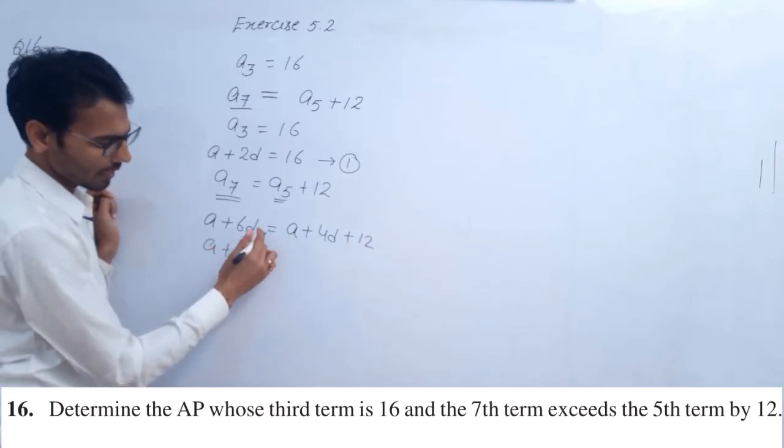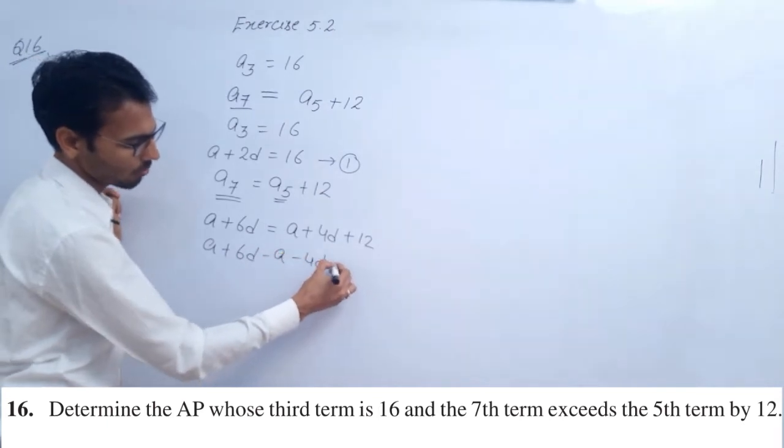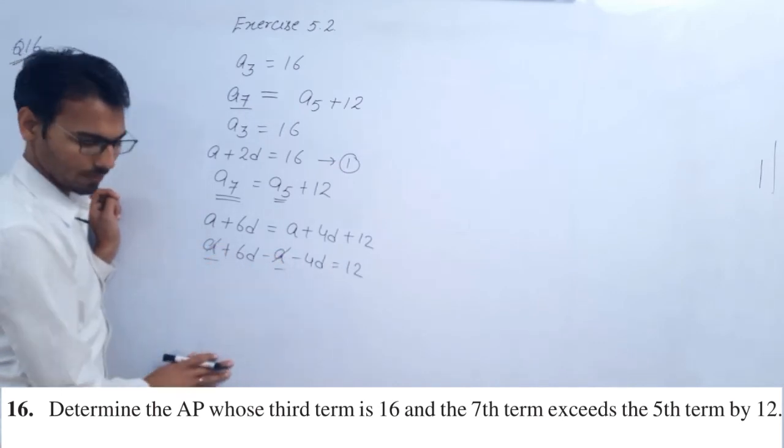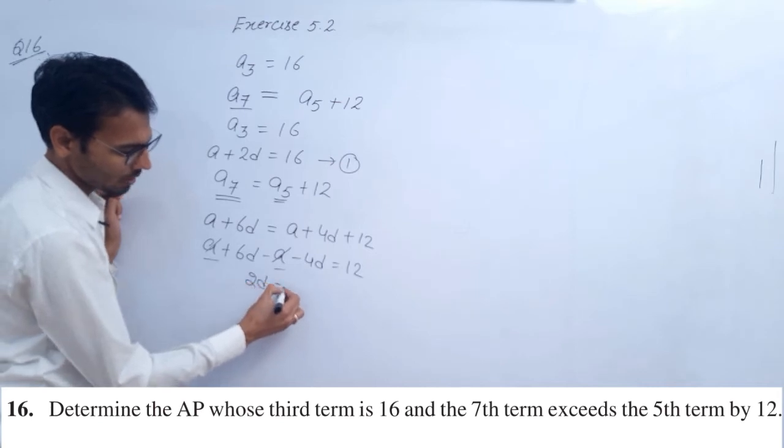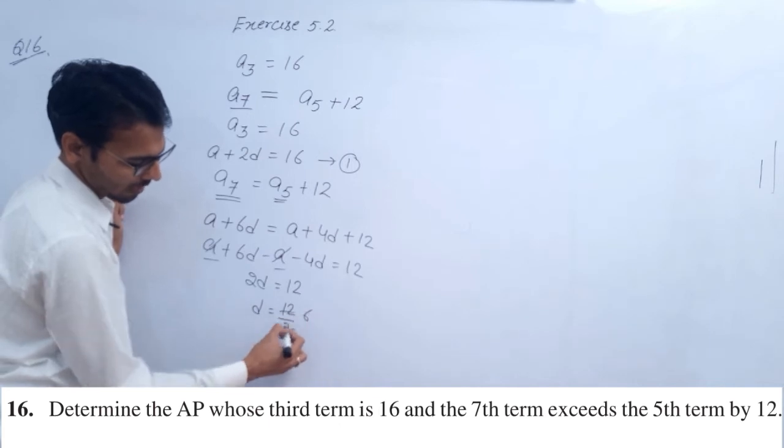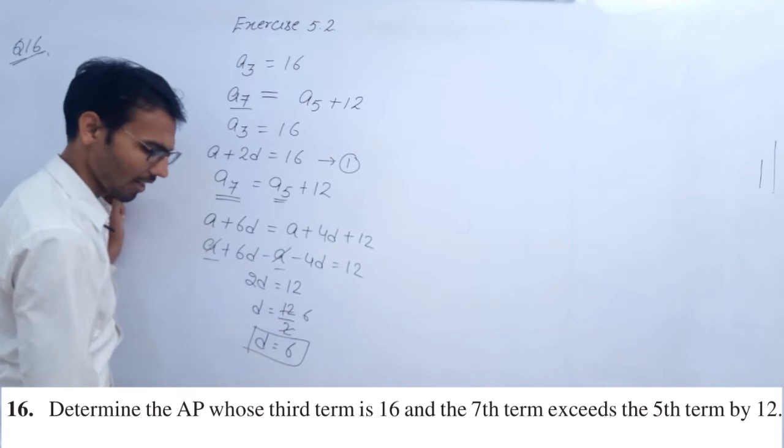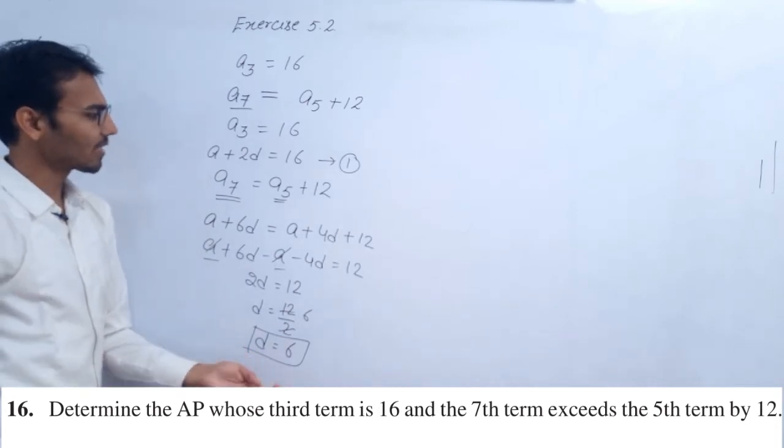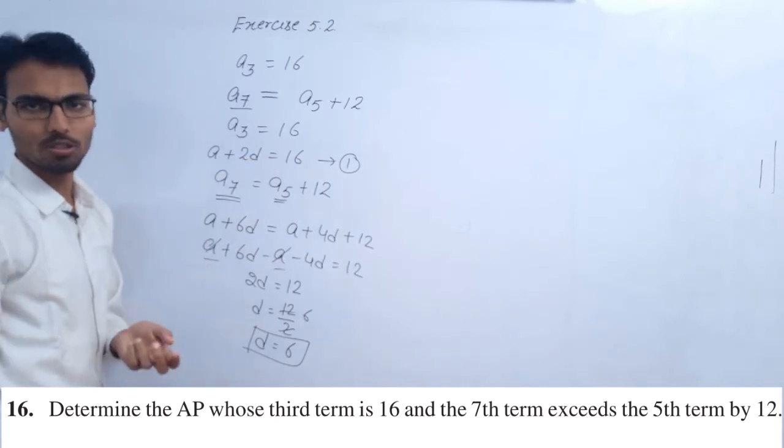Moving all terms with a or d to one side: a plus 6d minus a minus 4d equals 12. The a terms cancel out, plus 6d minus 4d, what remains? 2d equals 12. So d equals 12 by 2, which becomes 6. So d is 6, and I can put this value of d into equation number one to find a.